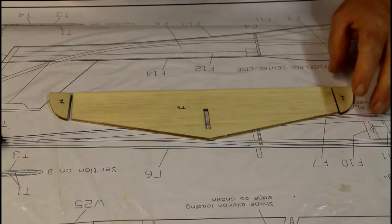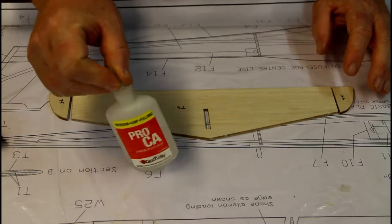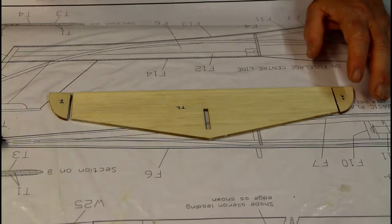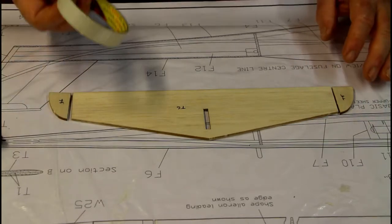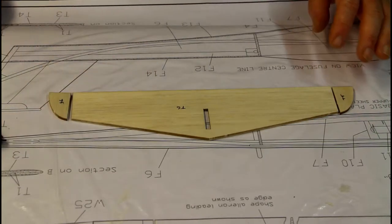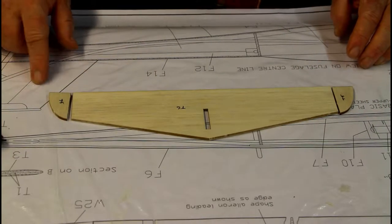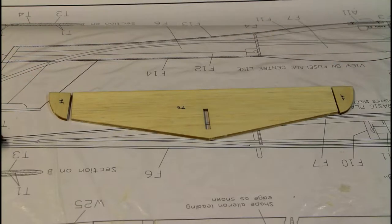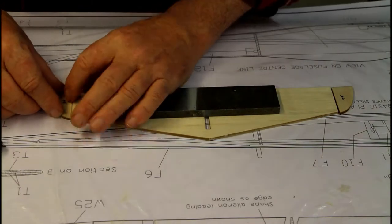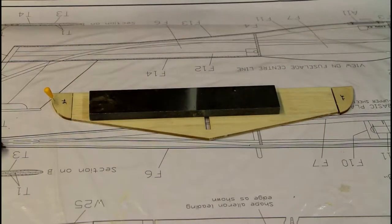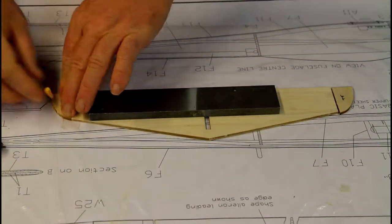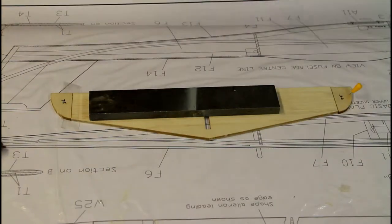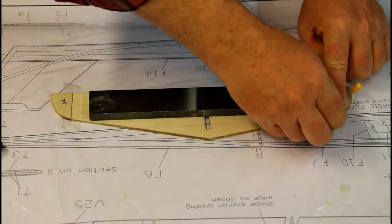Now I'm going to glue it on with some thick CA glue. And I'm going to use clear tape, just like I did when I glued together the skins for the tail fin.